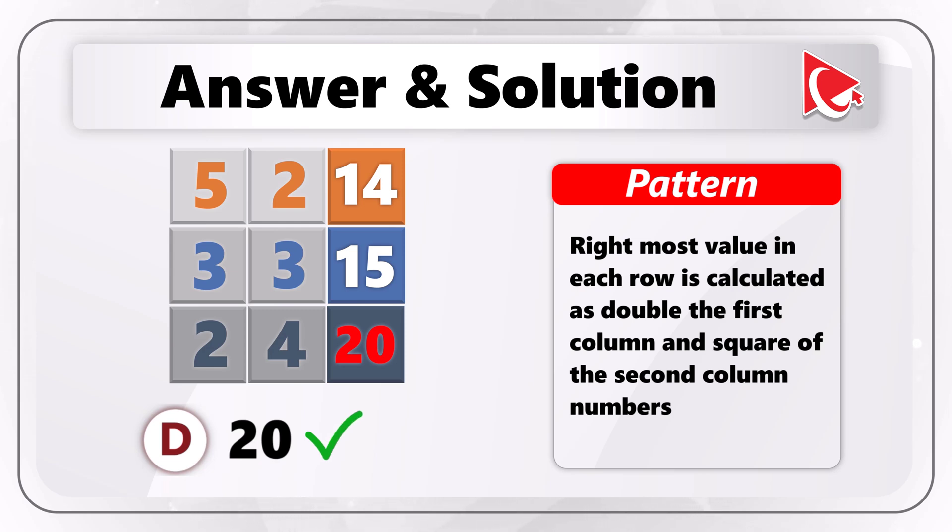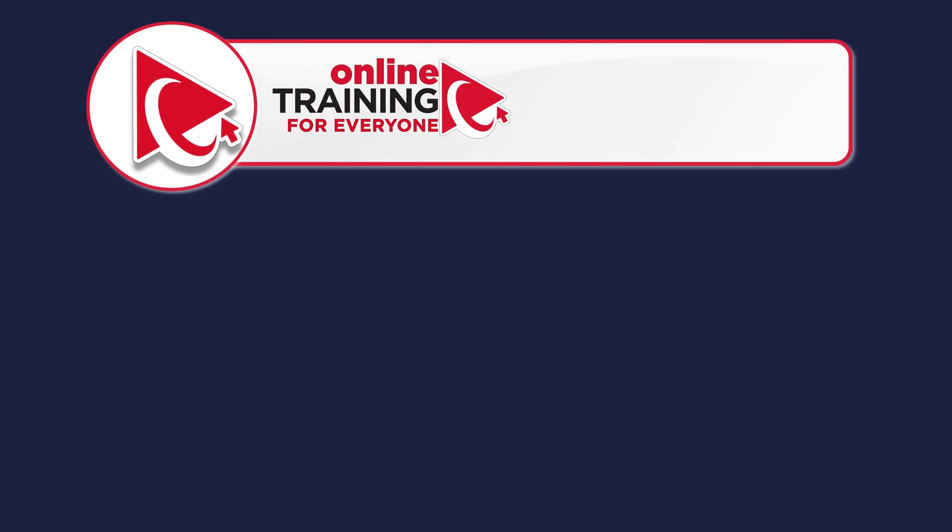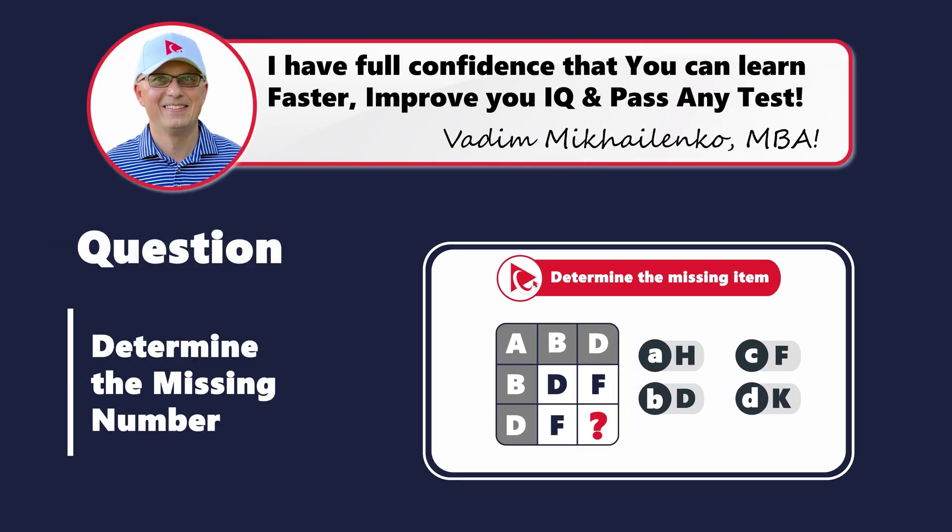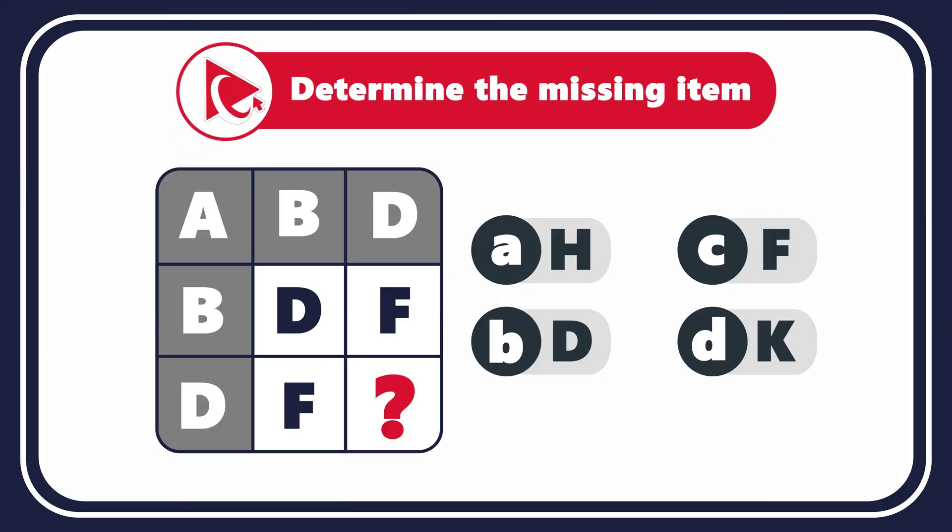Let's dive into the world of letters with this amazingly tricky question that not only evaluates your English alphabet knowledge, but also tests your analytical skills and your strategies for tackling challenges effectively. You're presented with a 3x3 matrix. The matrix has letters inside. The first row has letters A, B, and D. The second row has letters B, D, and F. And then the third row has letters D, F, and then comes the missing letter, which you need to select out of 4 possible choices. Choice A, H. Choice B, D. Choice C, F. And last but not least, choice D, K.